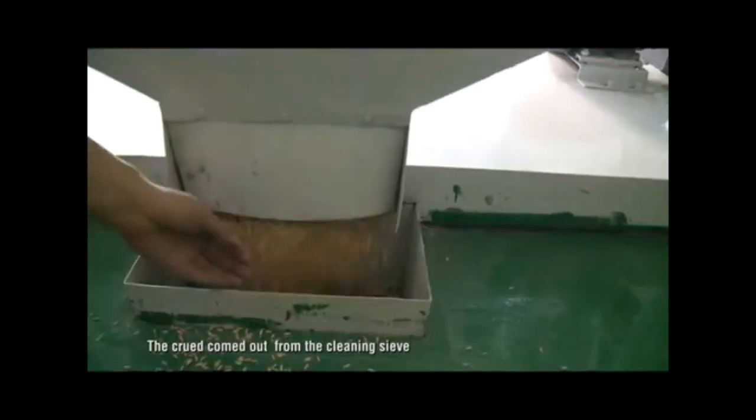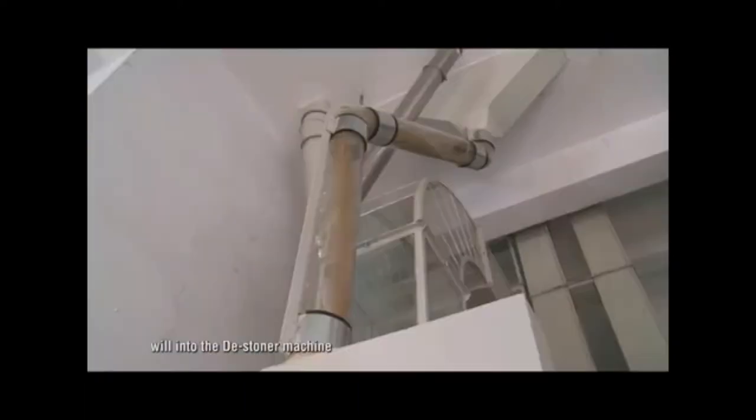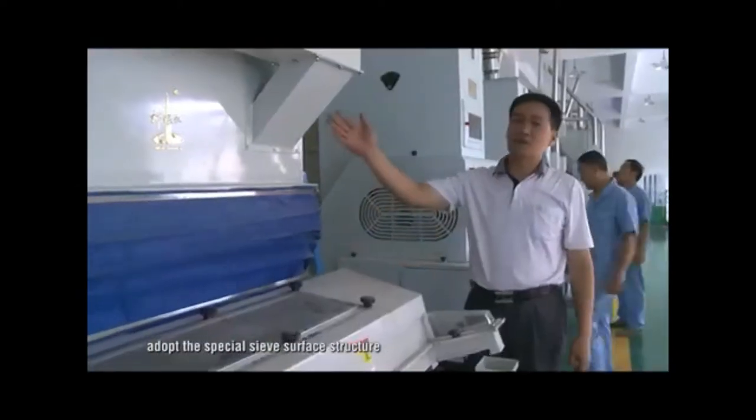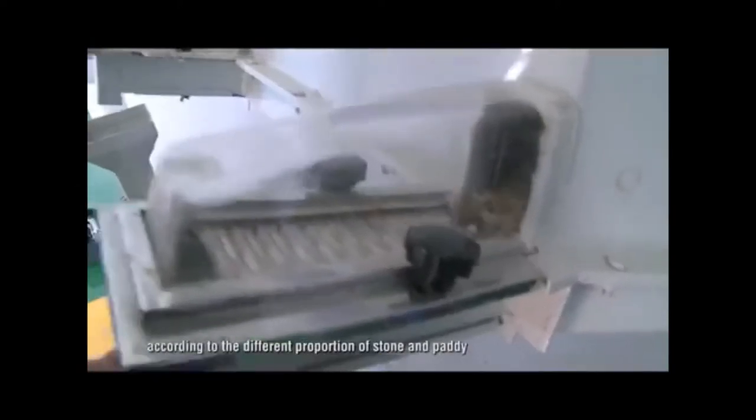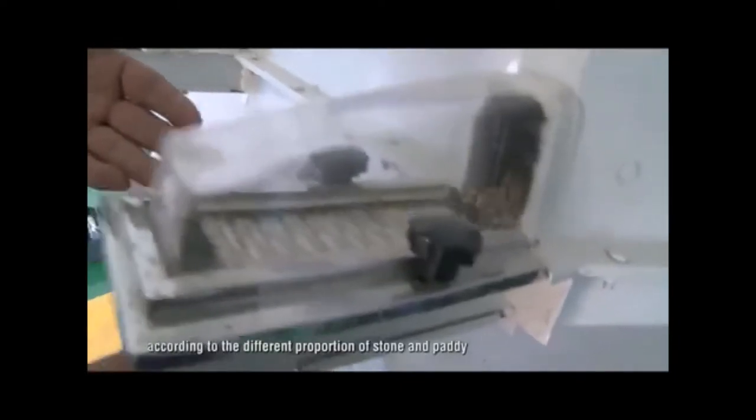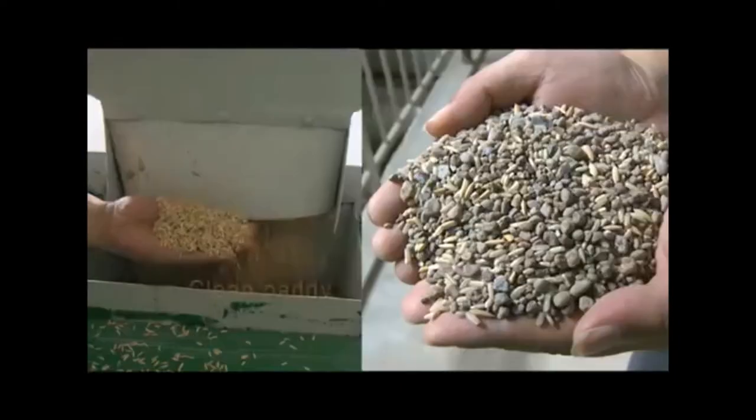The crude comes out from the cleaning sieve into the destoner machine. Using the special sieve surface structure, according to the different proportion of stone and paddy, thus separating paddy and stones.